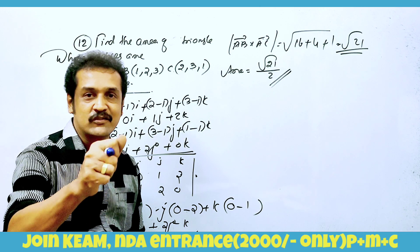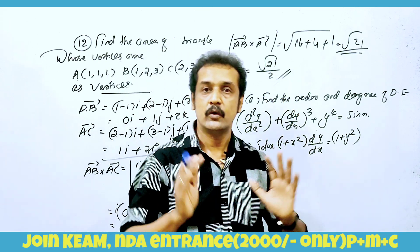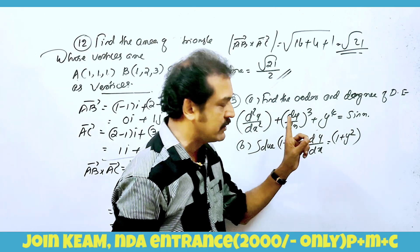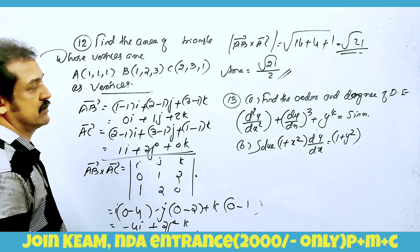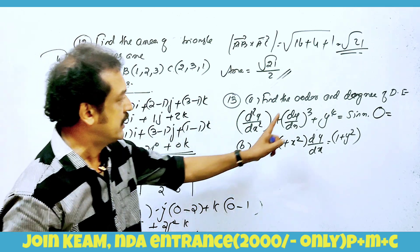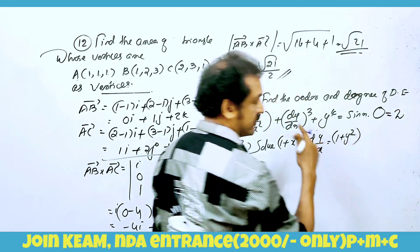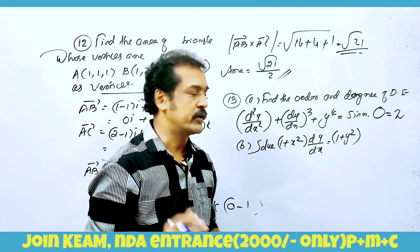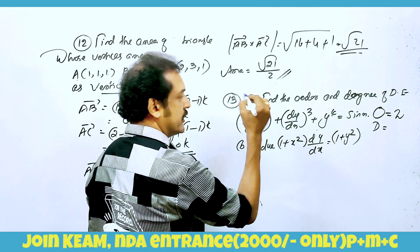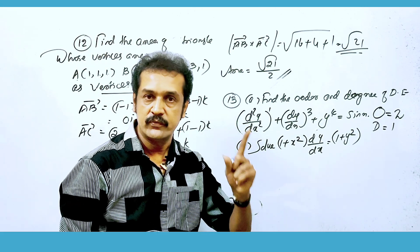Next question involves a differential equation. First, we identify the order — the highest derivative present gives the order. The degree is the power of the highest order derivative once the equation is in standard form. The whole power is called the degree of the differential equation.